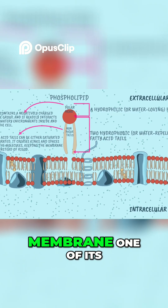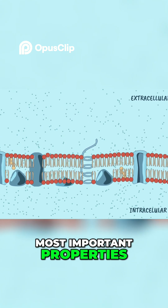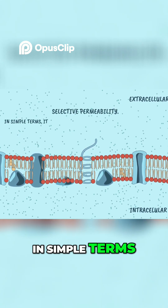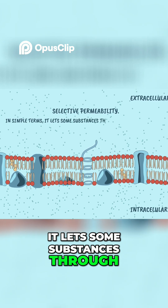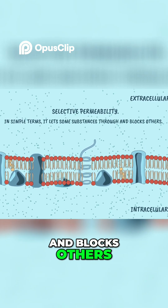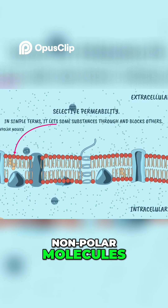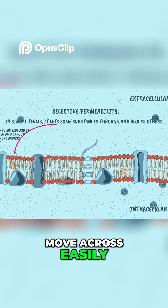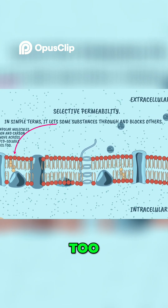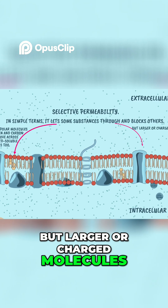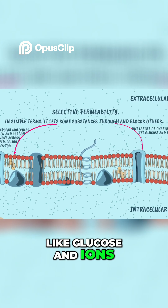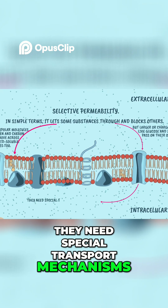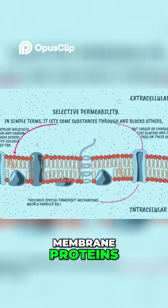This structure gives the membrane one of its most important properties: selective permeability. In simple terms, it lets some substances through and blocks others. Small, nonpolar molecules like oxygen and carbon dioxide move across easily, as do lipid-soluble substances. But larger or charged molecules, like glucose and ions, can't pass on their own — they need special transport mechanisms, mainly handled by integral membrane proteins.